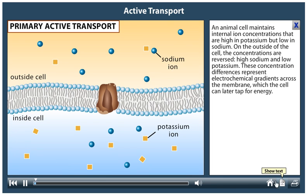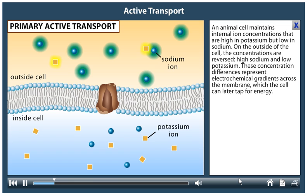An animal cell maintains internal ion concentrations that are high in potassium, but low in sodium. On the outside of the cell, the concentrations are reversed, high sodium and low potassium.